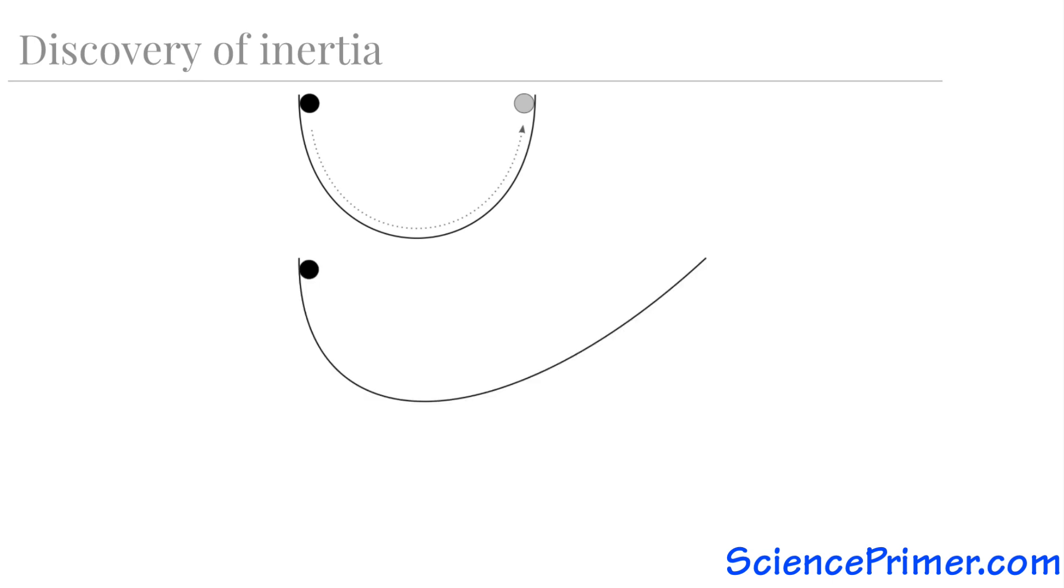Now consider a slightly different shaped container, one where the slope of one side is much shallower than the other. A ball placed in this container would follow the same behavior. As it rolls from side to side, it will reach the same height on each side of the shape, but due to the asymmetry, it will travel further from the center to the right than it does from the center to the left on each pass.